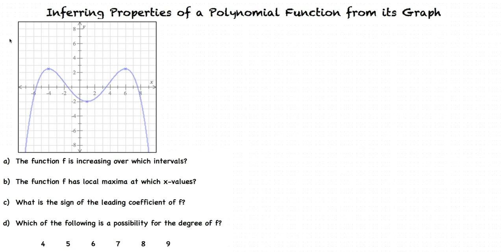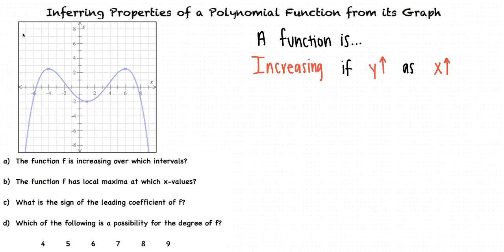Looking at the first question, how can we tell if the graph is increasing or decreasing? A function is increasing over an interval if the y-coordinates of the points on a graph get bigger from left to right — the graph looks like it is rising as the x-coordinates increase. A function is decreasing over an interval if the y-coordinates get smaller from left to right — the graph looks like it is falling as the x-coordinates increase.